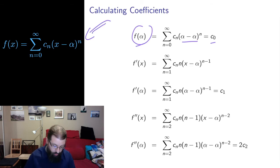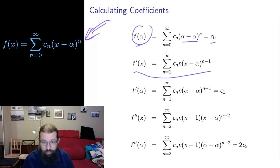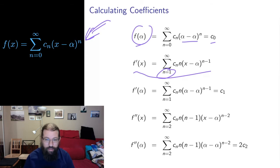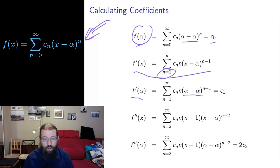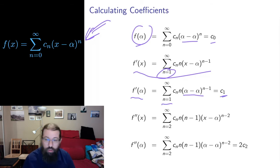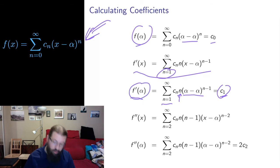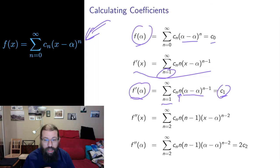Now let me differentiate, working with the general form. If I differentiate term by term, I get the derivative starting one index in, because the constant term is destroyed by differentiation and set to zero. Then I evaluate the derivative at the center point. I get alpha minus alpha for all terms except the first term, which is now the n equals 1 term. So I get C1 multiplied by n, but here n is 1, so C1 times 1 is just C1. The second coefficient is given by the first derivative of the function at the center point.